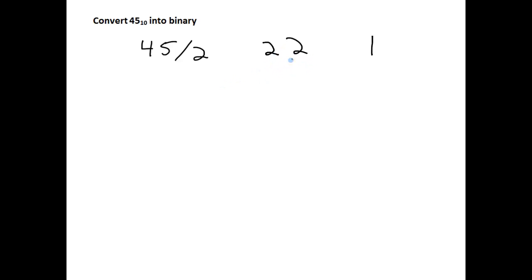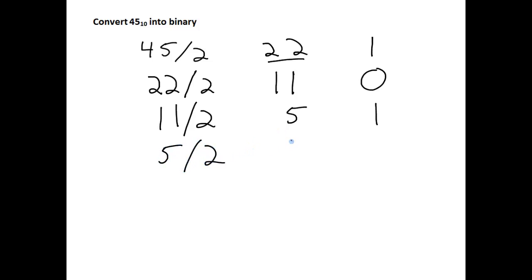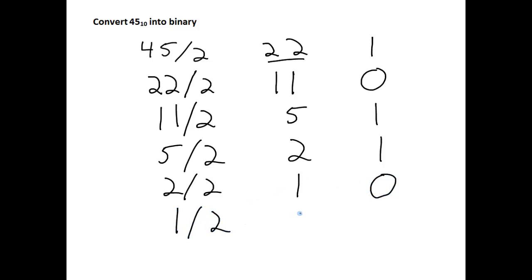It's called repeated divide by 2 because I take that whole number result from the previous division and divide it by 2 again. So 22 divided by 2 is 11 with a remainder of 0. Bring the whole number part down — 11 divided by 2 is 5 with a remainder of 1. 5 divided by 2 is 2 with a remainder of 1. 2 divided by 2 is 1 with a remainder of 0. And finally, 1 divided by 2 is 0 with a remainder of 1. I keep dividing until the whole number part reaches 0.